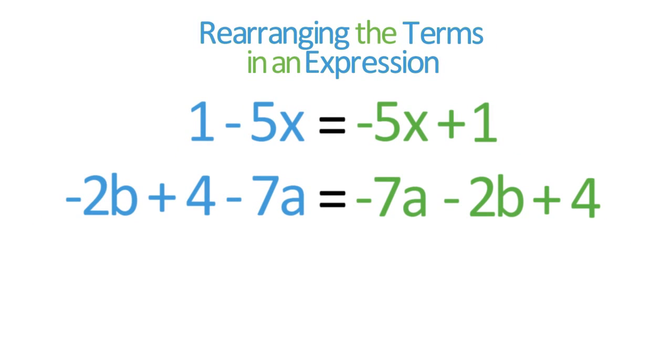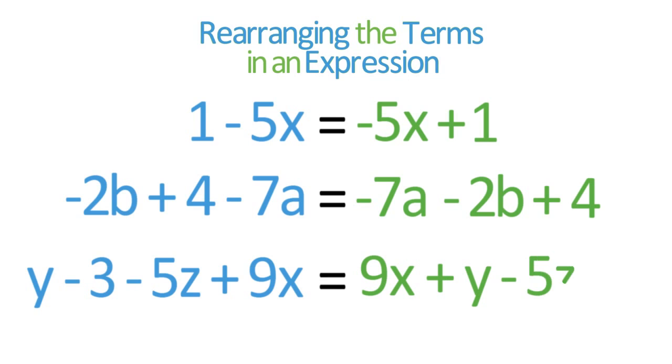As a final example, to rearrange the expression y - 3 - 5z + 9x, place the x, y, and z terms in order with the constant at the end.